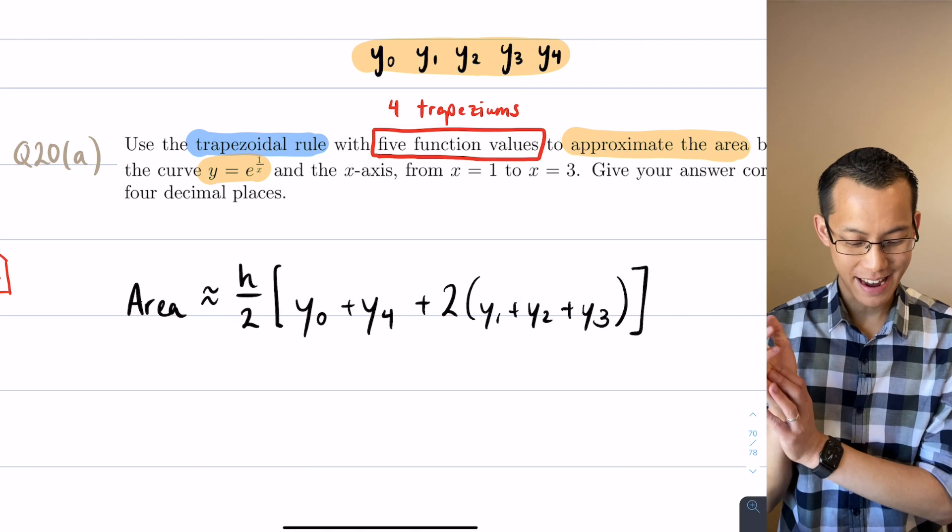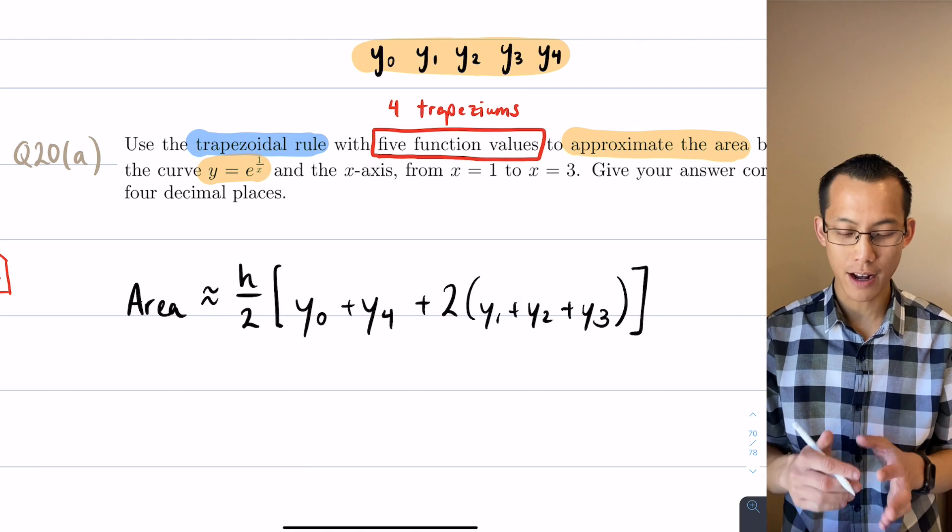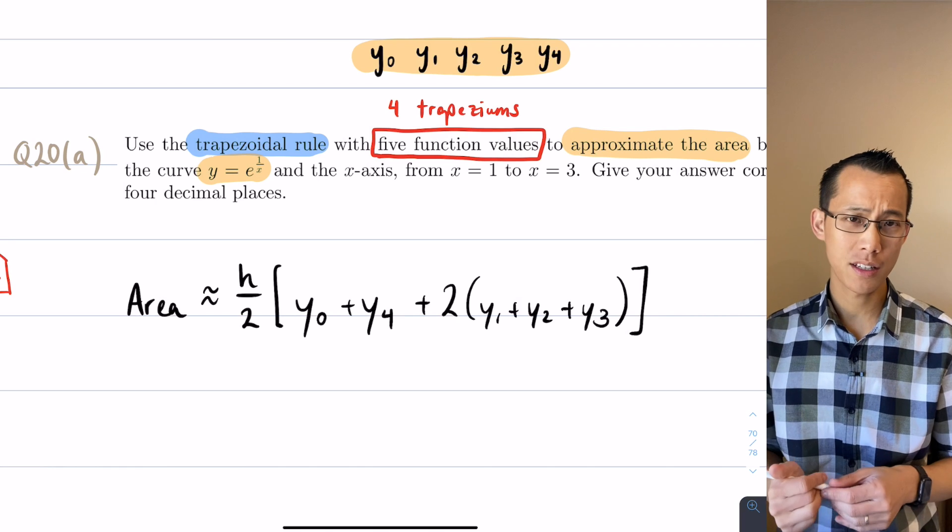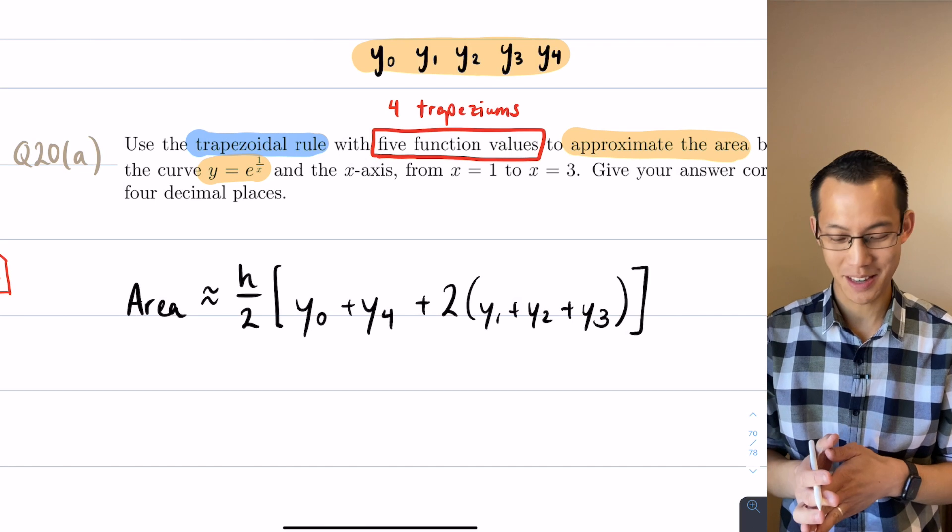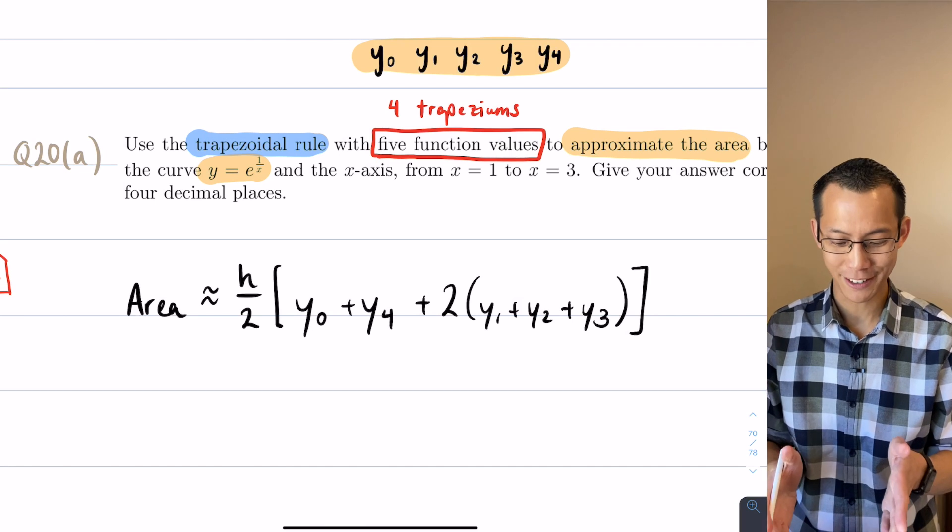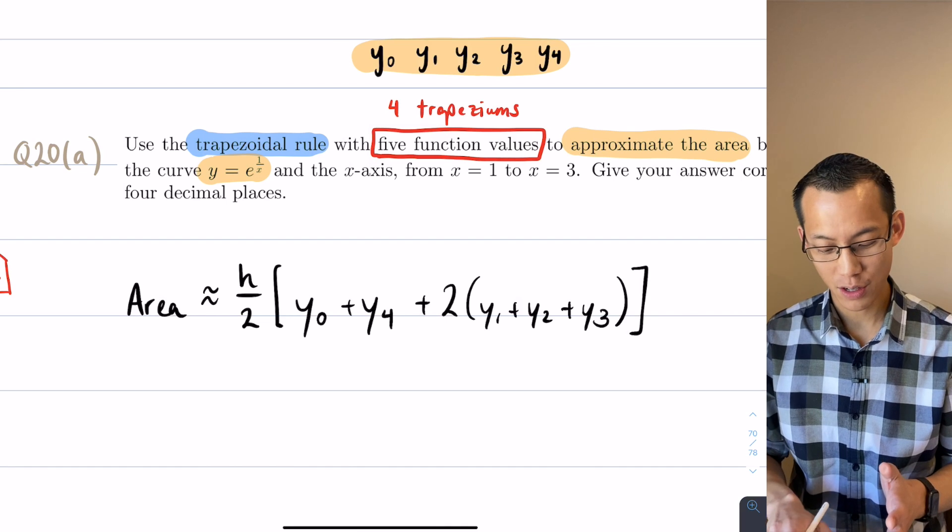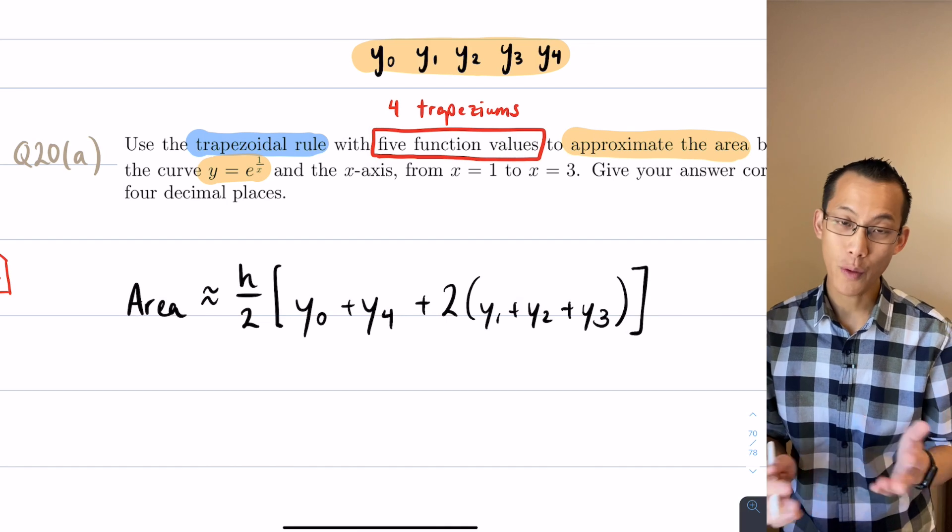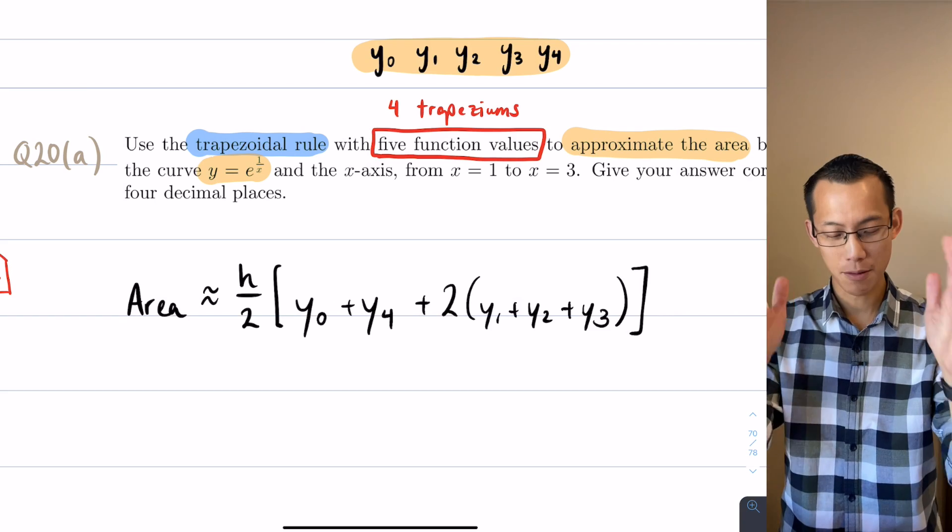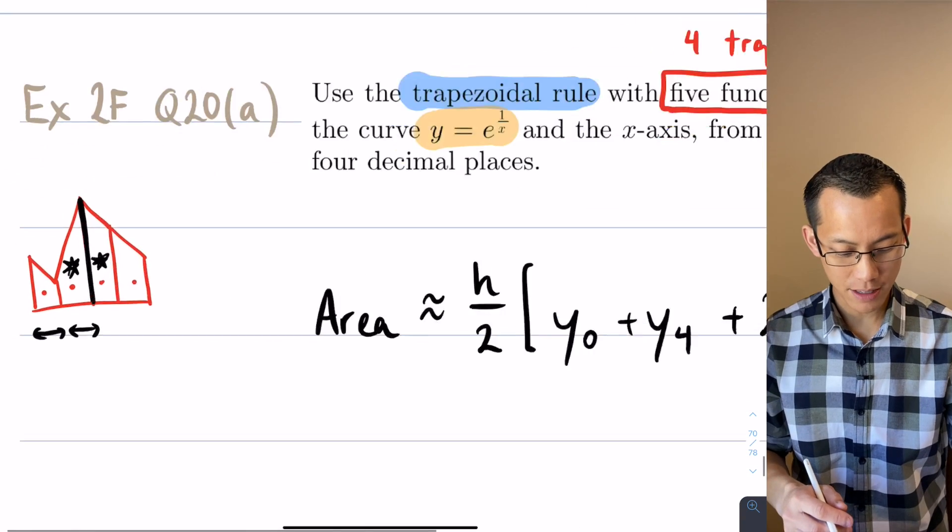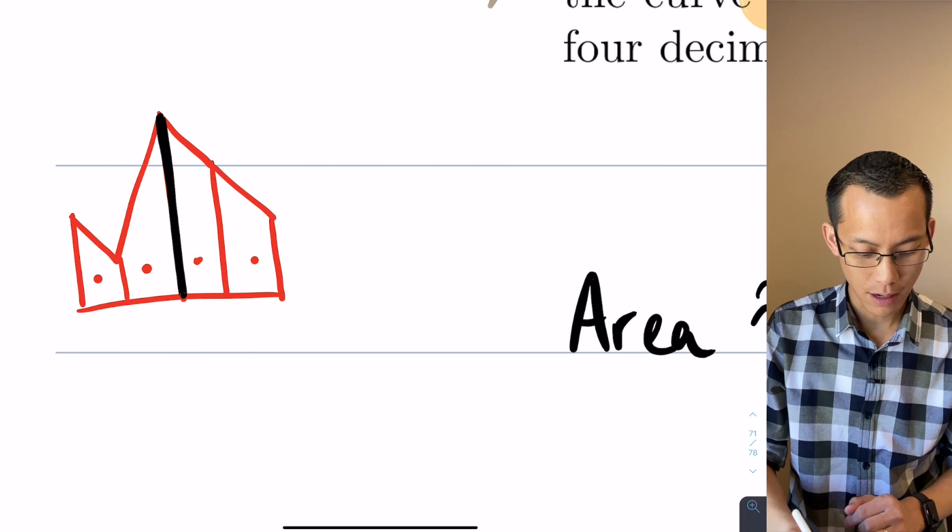So now I've got my trapezoidal rule formula for the area set up. I need to know what are all the things that I'm going to substitute into here. Now none of the values that I need to substitute are actually in the question directly, but I will use the question to actually get them. I'm thinking about the x values that correspond to these y values.